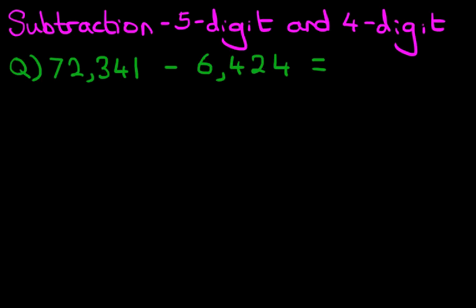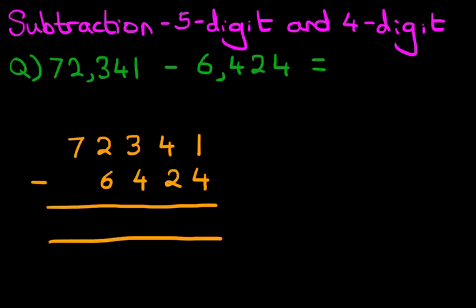The first stage is to rewrite this question into the vertical format. So let's do that over here: 72,341 minus 6,424. And let's label the columns. We've got units, tens, hundreds, thousands, and ten thousands. So we've completed stage one in rewriting the question from the horizontal format into the vertical format.